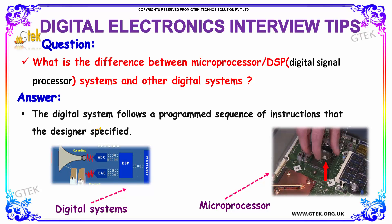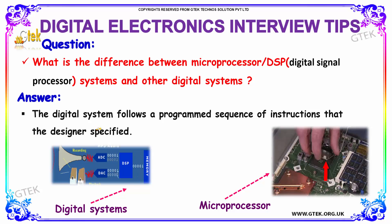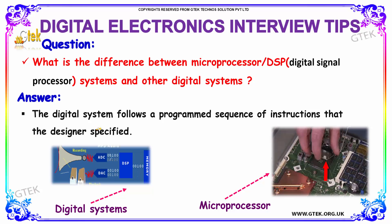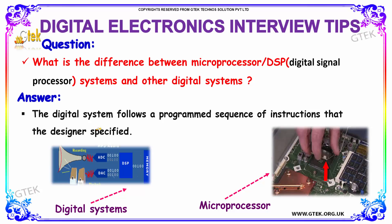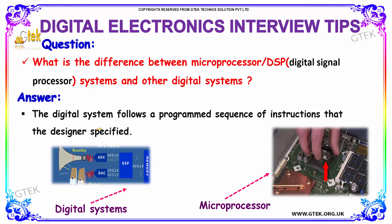The next question is: what is the difference between a microprocessor system and other digital systems, in terms of DSP — digital signal processing? The answer is quite simple: the digital system follows a programmed sequence of instructions that the designer specified.